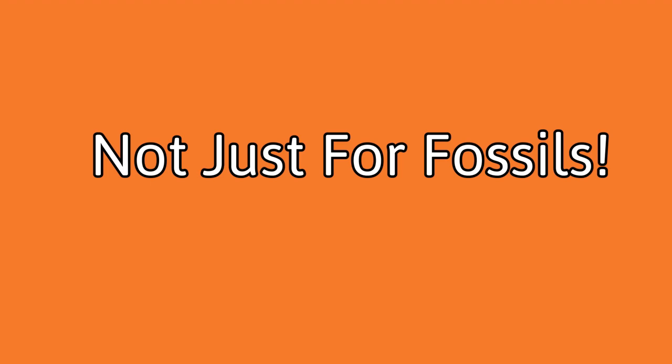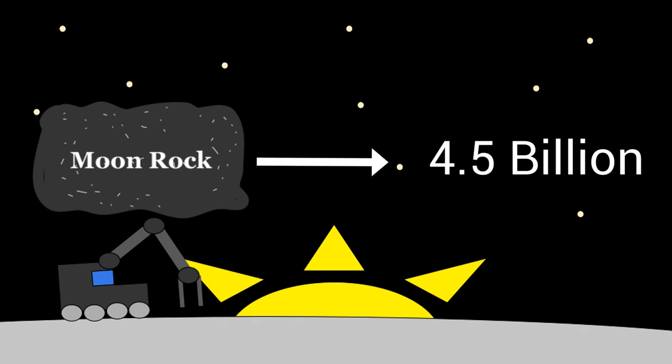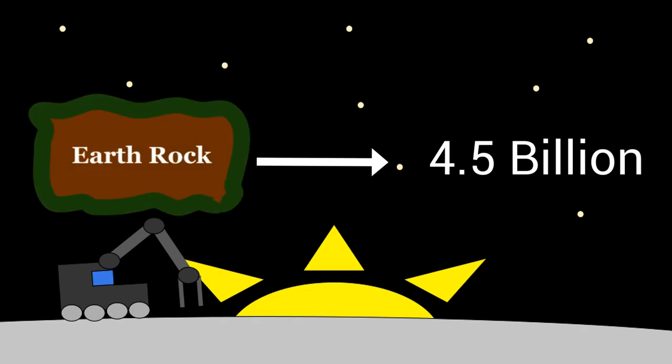Scientists have used this method to find how old all sorts of rocks are. That's how we found the rock on the moon to be about 4.5 billion years old, which helps to confirm that the moon used to be part of Earth, which is also around 4.5 billion years old.